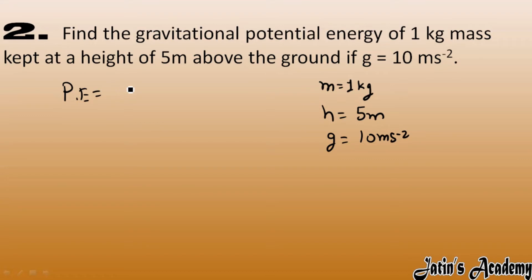Potential energy formula we have is mgh. Mass value we have is 1, g value we have is 10, h value we have is 5. So here we got 50, and the SI unit of gravitational potential energy, it is a form of energy.